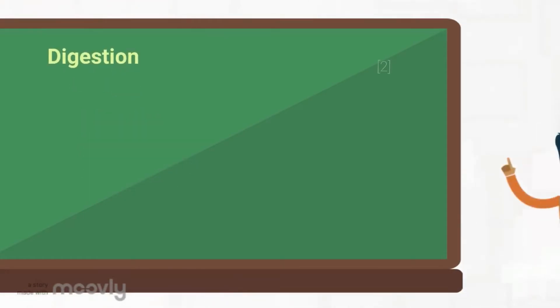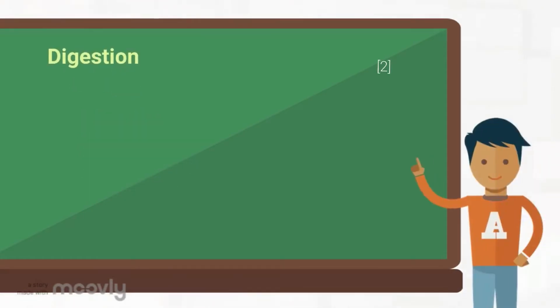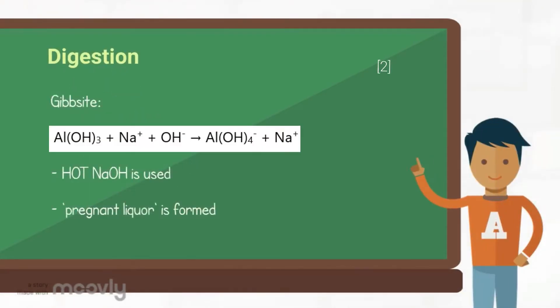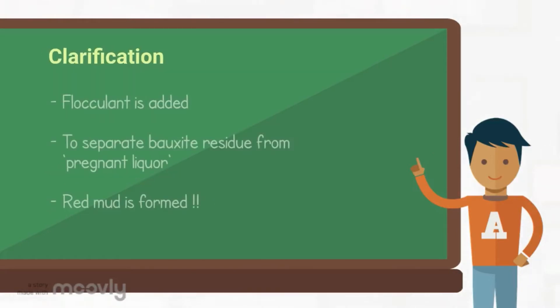Hot caustic soda is used in digestion to dissolve aluminium-bearing minerals in bauxite. At this stage, a sodium aluminate supersaturated solution of pregnant liquor is formed.